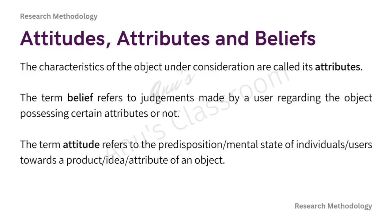Each object, product or service is believed to be composed of certain characteristics which fulfill certain needs of its user. For example, why do you choose Apple? Maybe it is the security feature, the design, or the camera. Each product has certain characteristics that appeal to us and fulfill some of our needs. These needs could be psychological, physical or social in nature. These characteristics of the object under consideration are called its attributes.